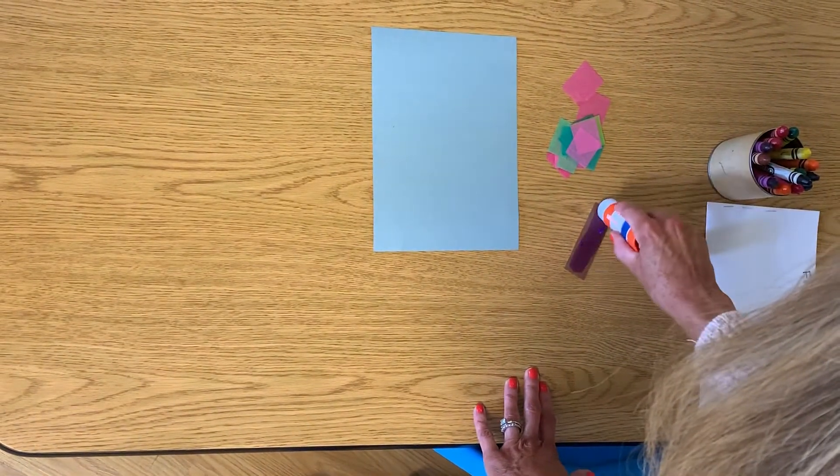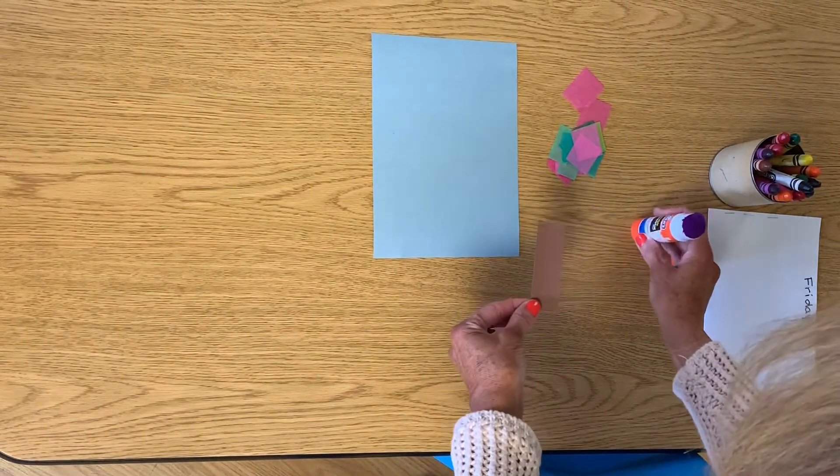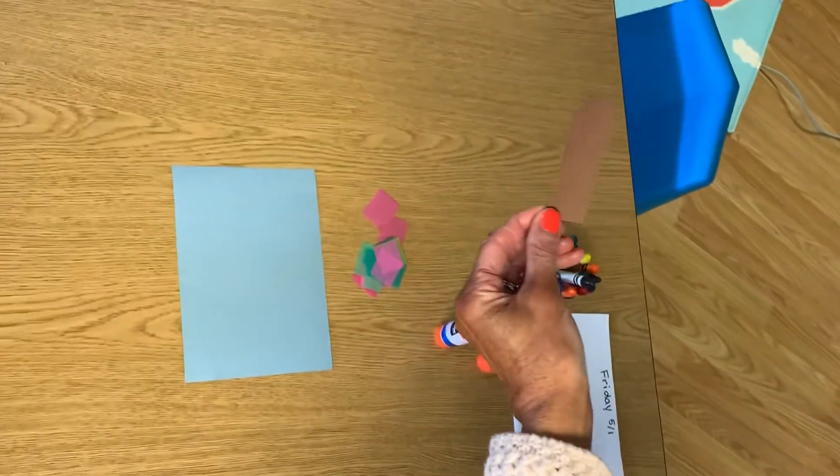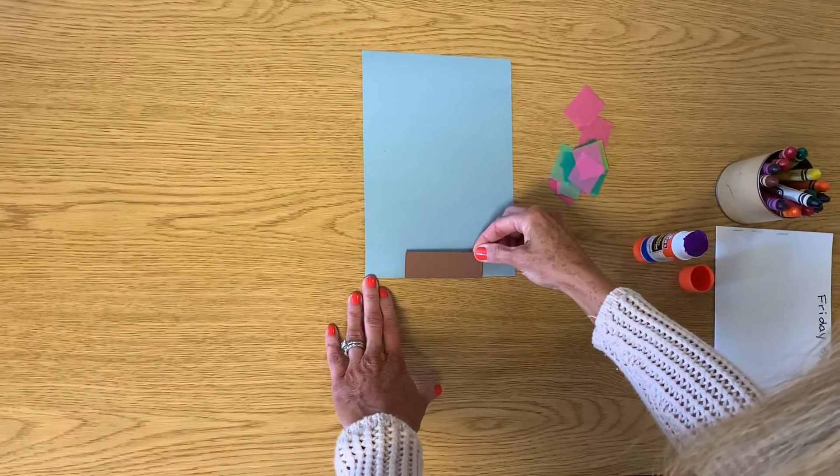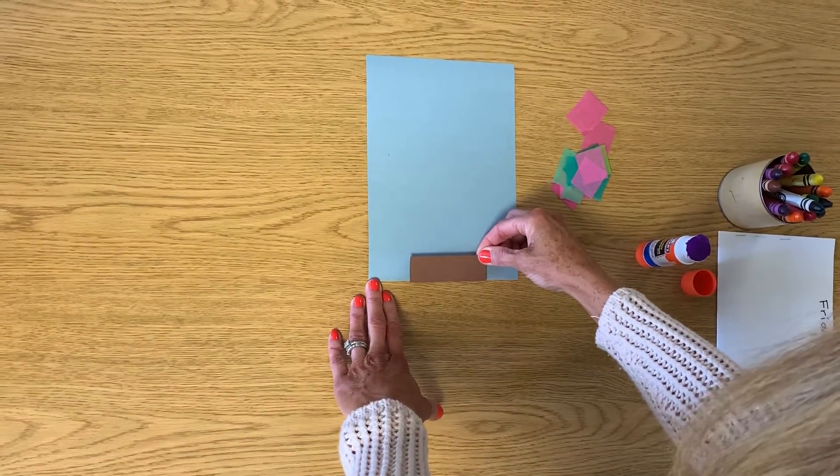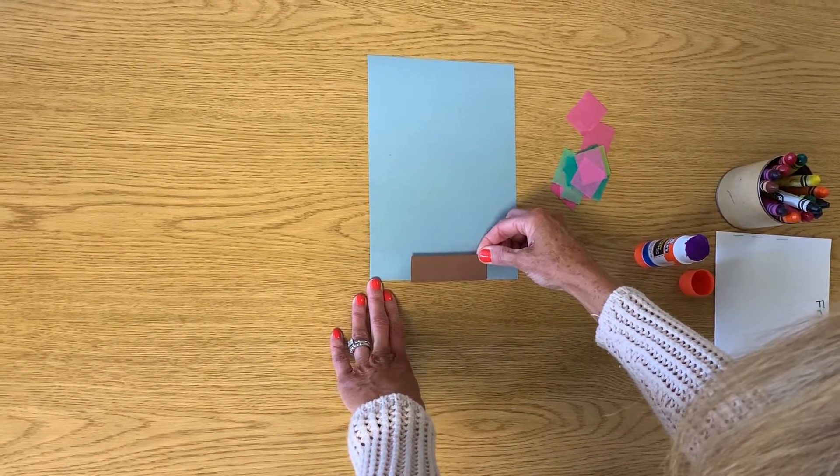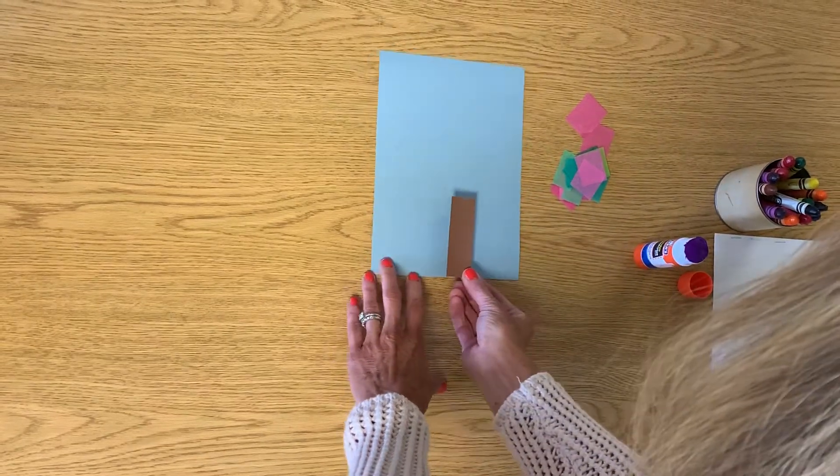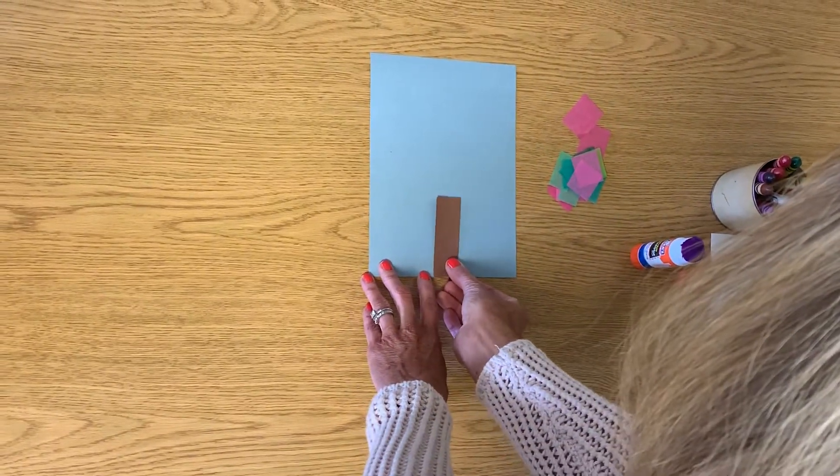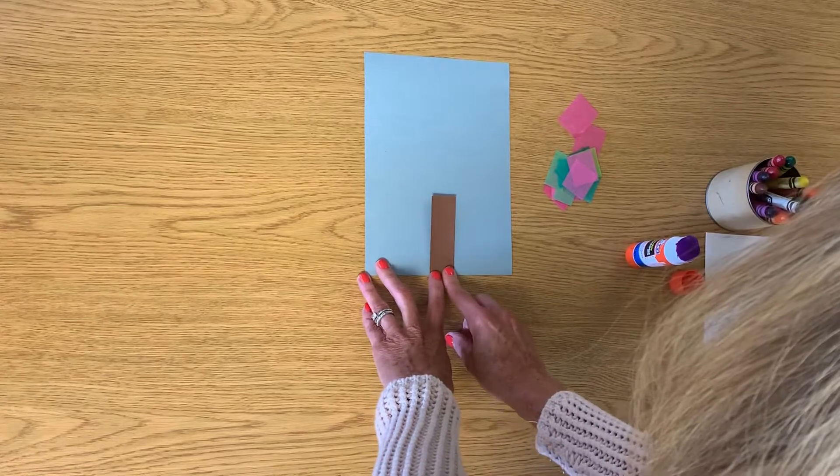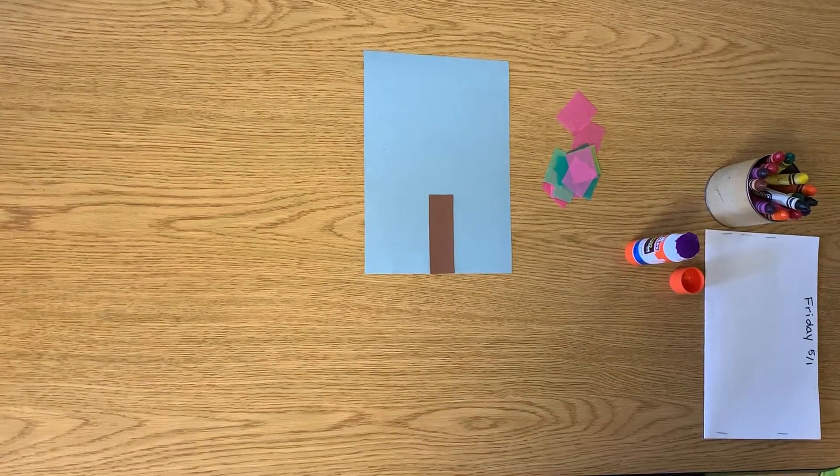I'm going to turn it over. I want this to be sticking straight up so it's long. If I go like this, this is not right. That's not being placed on the paper correctly. I need it to point up right in the middle, touching the bottom. So it should look like that.